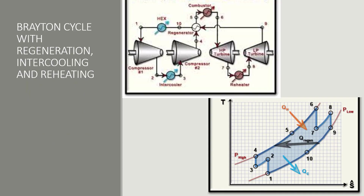In the Brayton cycle, it was noted that if you use any of these three — regeneration, intercooling, or reheating — by itself, it cannot increase thermal efficiency by a great amount. So we use all three together in one cycle: intercooling, reheating, and regeneration. When used practically in the Brayton cycle, we use all three at once because a single optimization alone will not increase thermal efficiency significantly. For good performance, we use all three together.